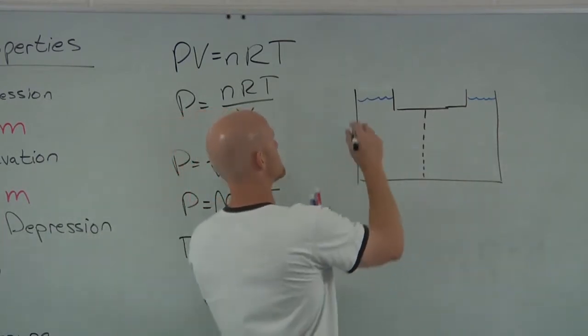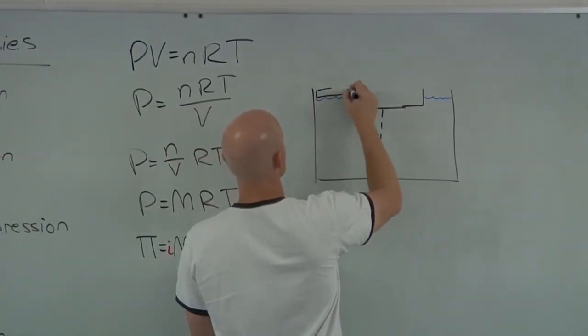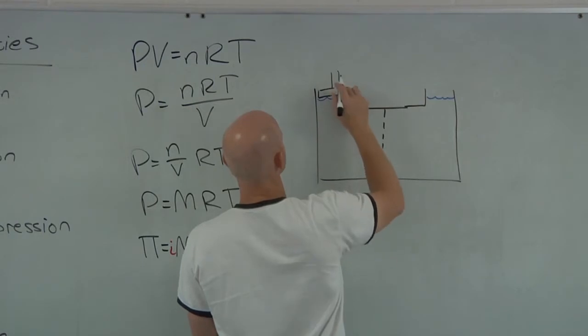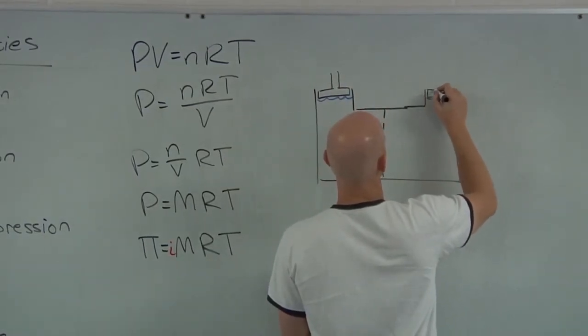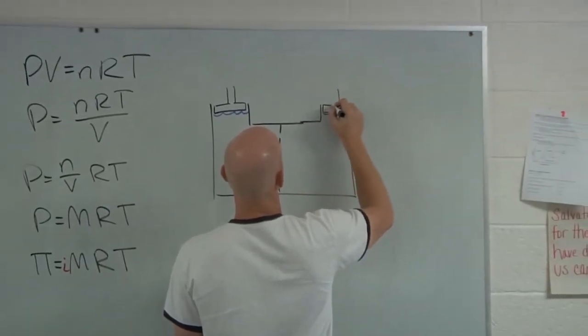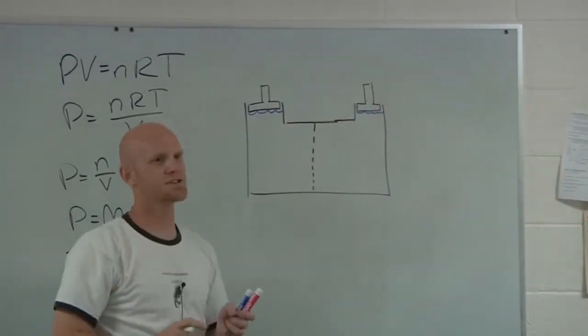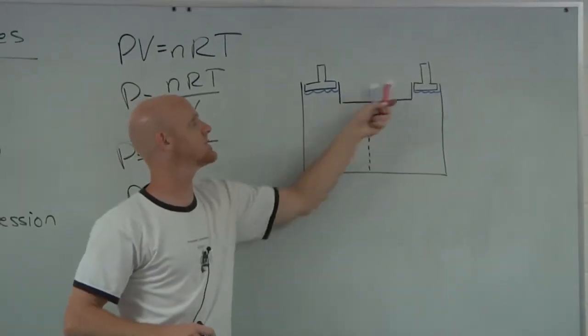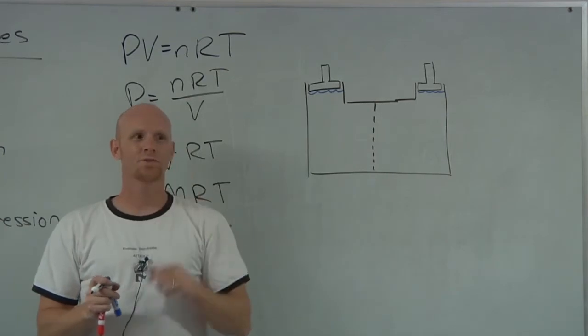So in this case, we put a plunger or a piston on this side, and we put another one over on this side. And these plungers can move up and down in the cylinders here on either side.